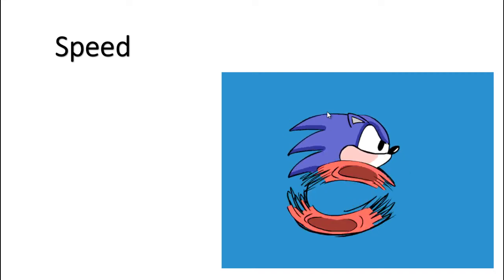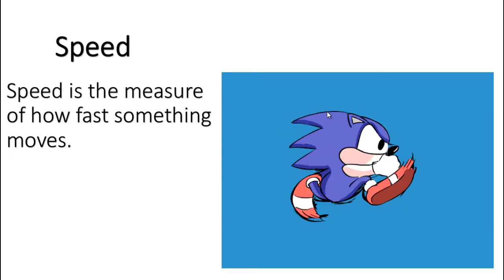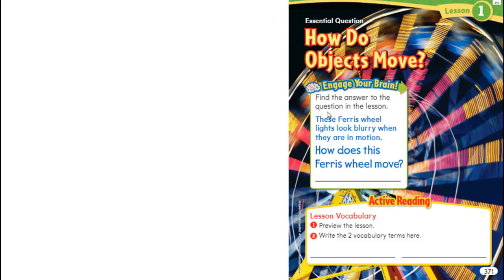When something is moving, sometimes it moves very fast and sometimes it moves slowly. If we want to measure how fast an object moves, we call it speed. The speed of an object tells us how fast it's going, how fast it's moving. Speed is the measure of how fast something is moving.